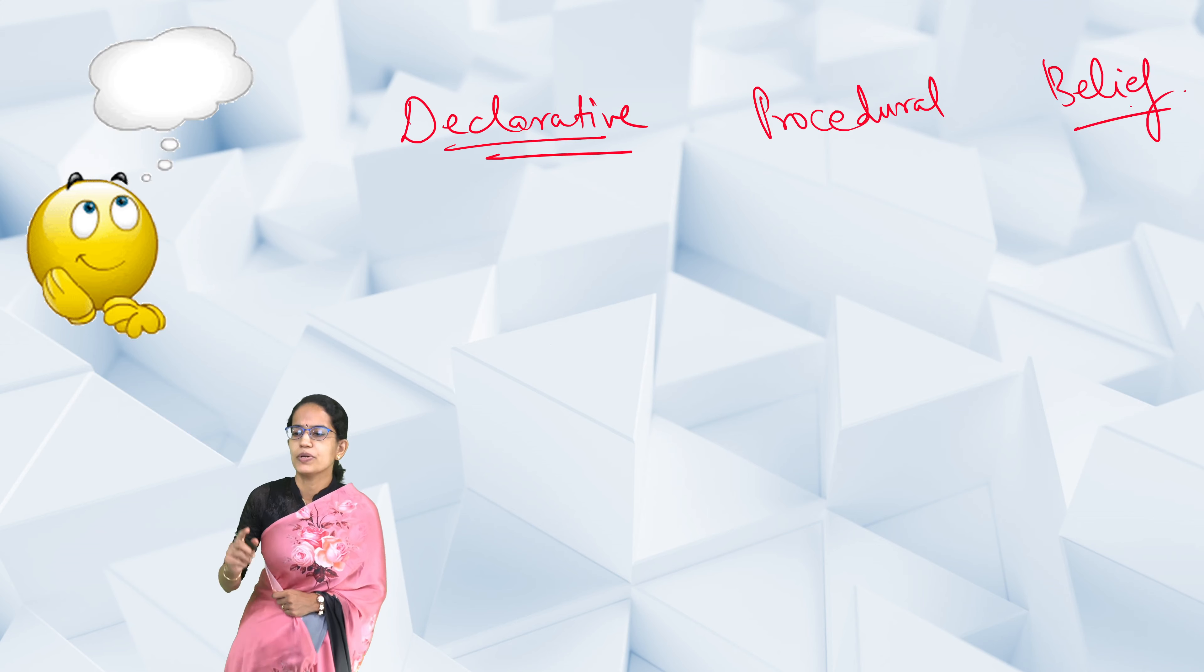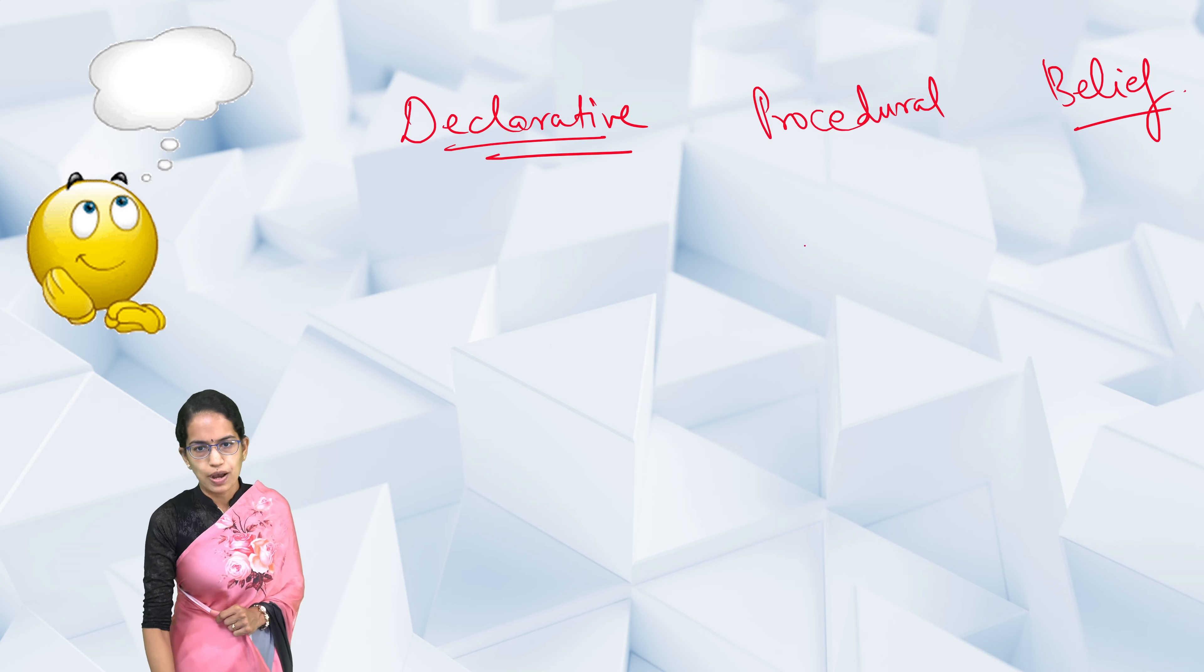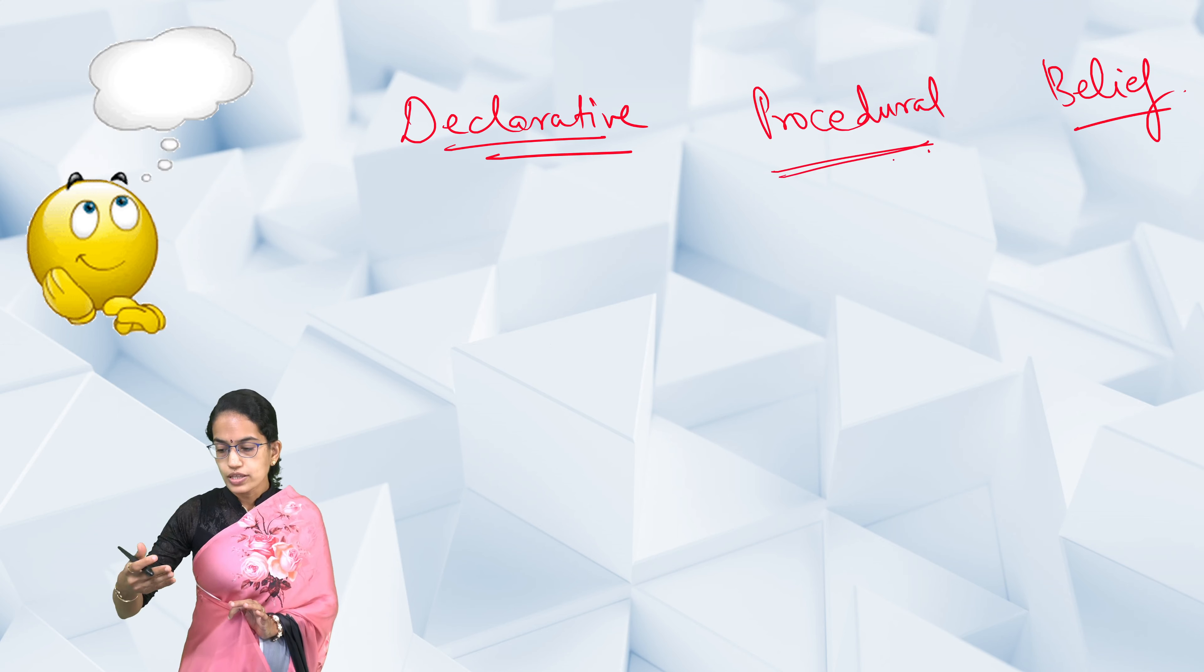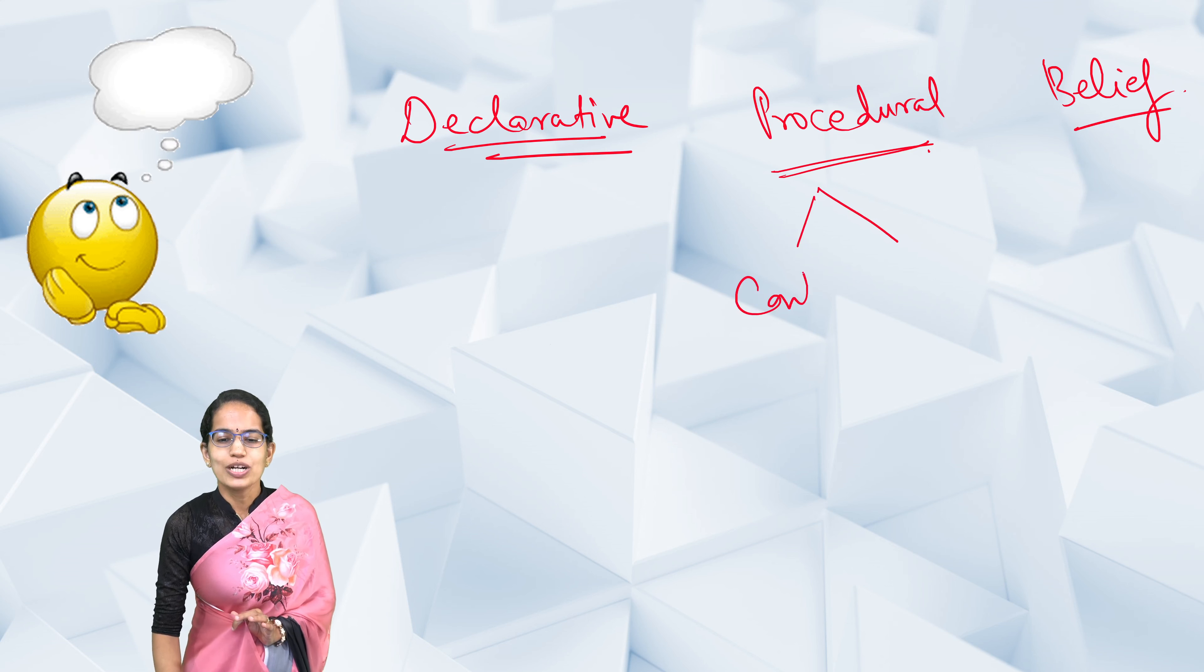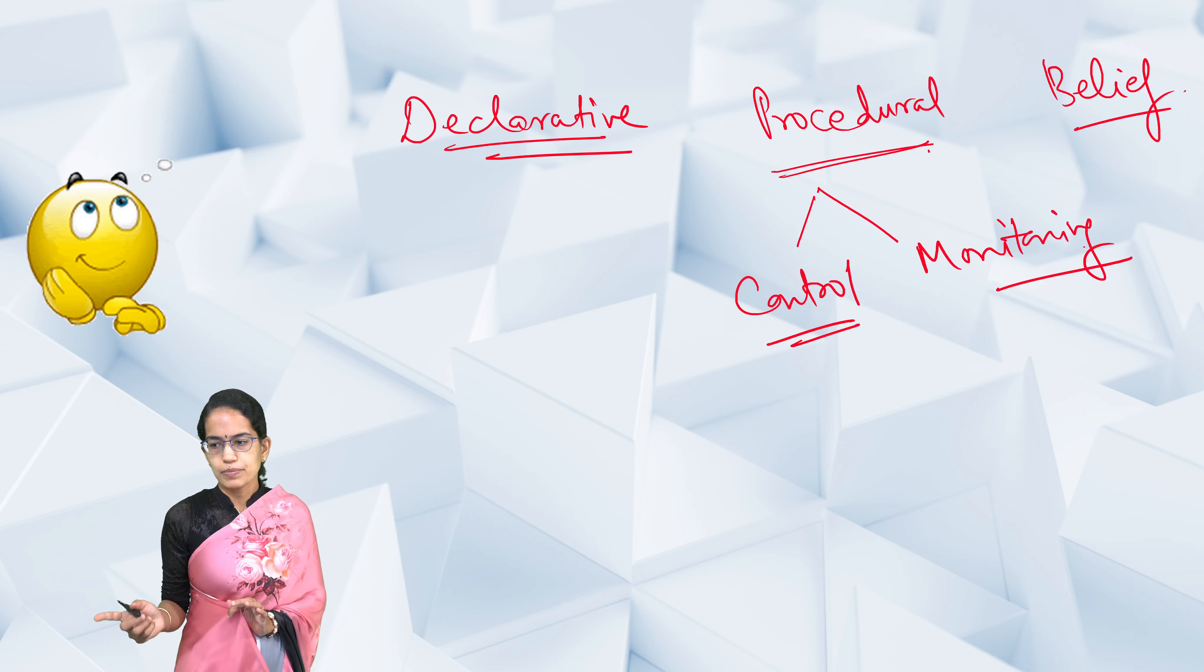Belief metamemory is associated with knowledge, ideas, social cognition, and judgment power. Procedural metamemory focuses on how good the memory actually performs—how good is the memory's performance. There are two elements: first, the process of control, and next, monitoring the procedural metamemory.